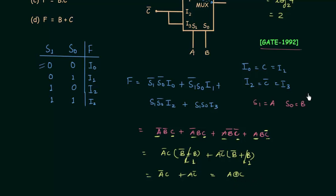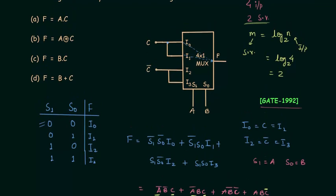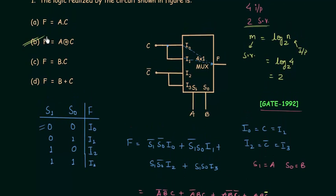The output f equals a XOR c. Looking at the options, option B is the correct answer. You only have to take care of the values assigned to the inputs and selector variables in the problem.